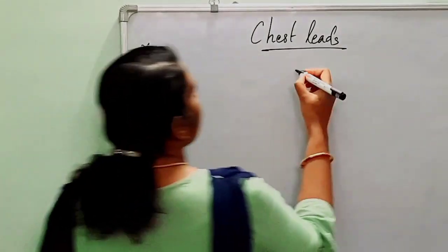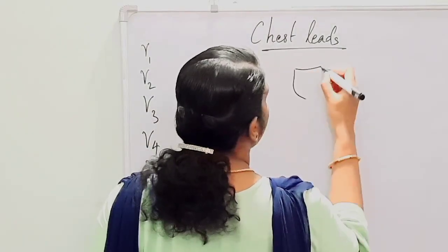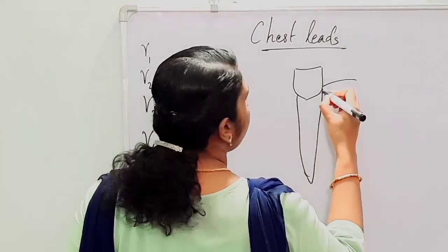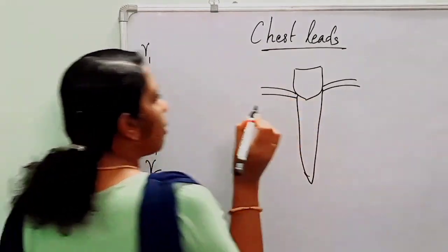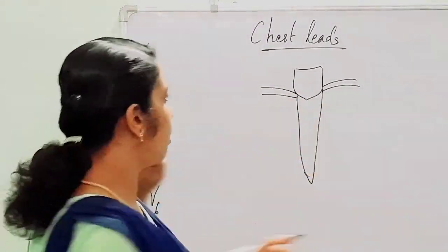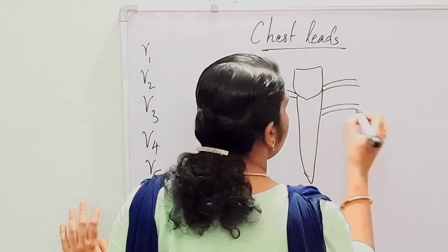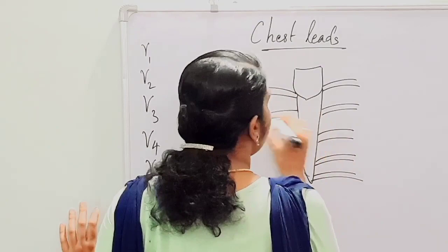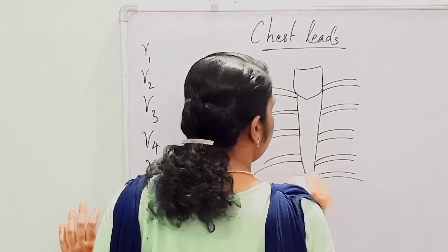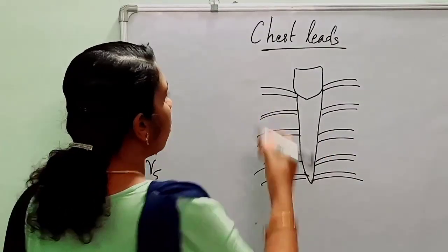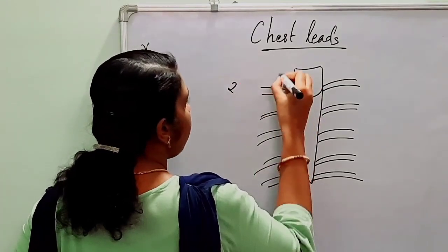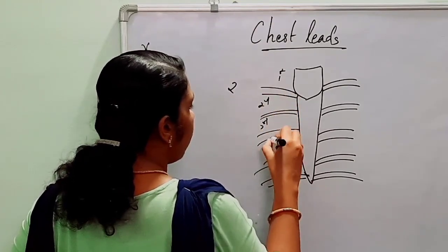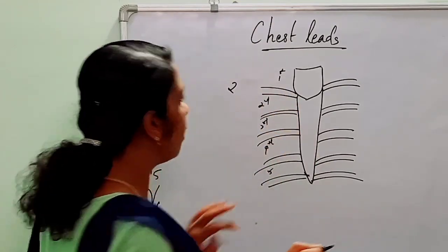This is the manubrium sternum and this is the body of sternum. The ribs connect at the sternal angle, which is at the level of the second rib. This is the third, fourth, fifth, and sixth rib. The space between the first and second rib is the first intercostal space, followed by the second, third, fourth, and fifth intercostal space.